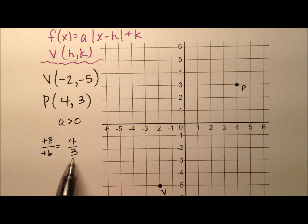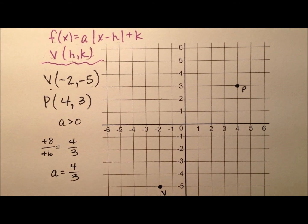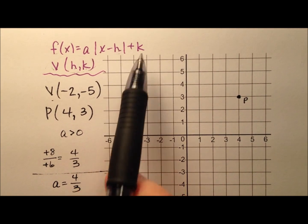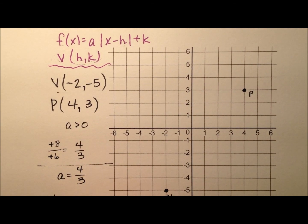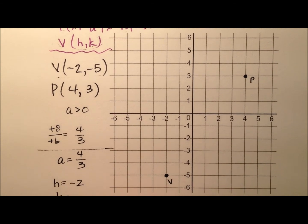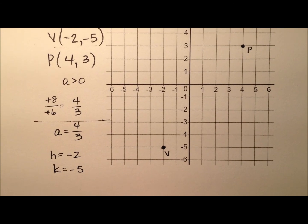So if a is positive and the slope is 4 thirds, I know a is 4/3. Well, the other two pieces are h and k, and we can get those from our vertex. h is -2, and k is -5.